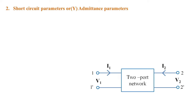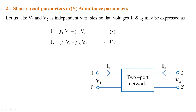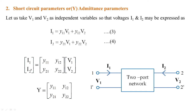Moving to short-circuit parameters (admittance or Y parameters): when v1 and v2 are independent variables, i1 = y11·v1 + y12·v2 and i2 = y21·v1 + y22·v2. The Y parameter matrix is [y11, y12; y21, y22].